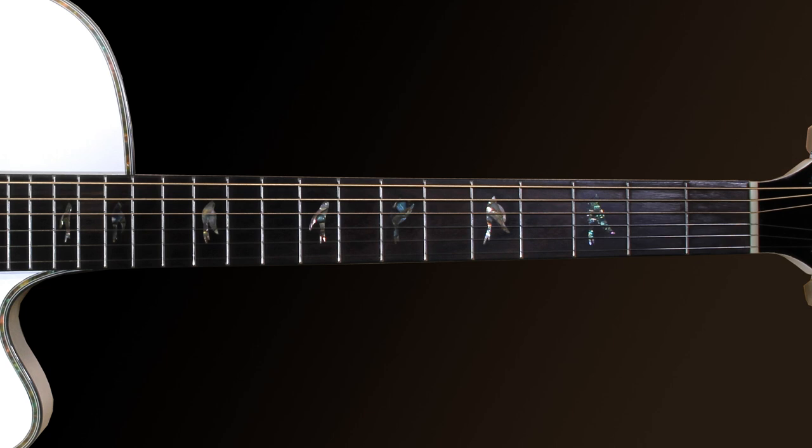Moving up a fret or up the fretboard means moving towards the bridge or the tailpiece of the guitar, and moving down a fret or down the fretboard means moving towards the nut or the headstock where you tune the guitar.